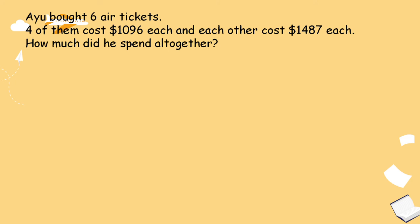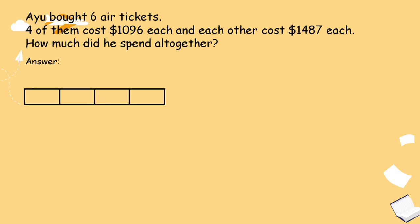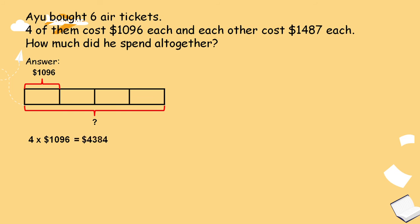Next, about word problems. Ayu bought 6 air tickets. 4 of them cost $1,096 each and the other 2 cost $1,487 each. How much did he spend altogether? First, find the cost of 4 tickets. Multiply 1,096 times 4 equals $4,384. So he spent $4,384 for 4 tickets.